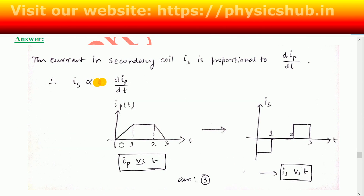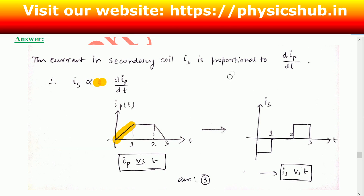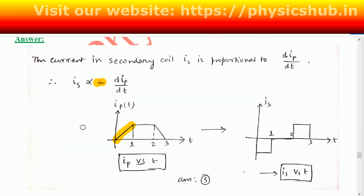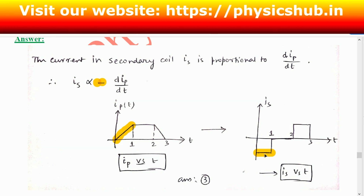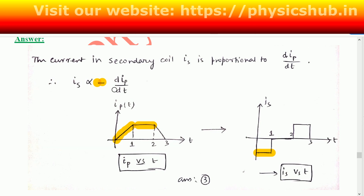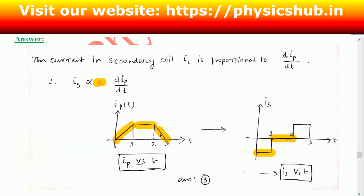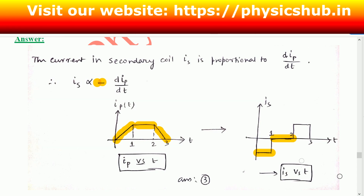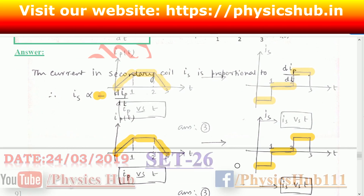We take the derivative of the input signal with a negative sign to get the output. From the first segment to the next, the input is a linear function, so the derivative is a constant — but with a negative sign, giving a negative constant. Where the input is constant, the derivative is zero. For the portion with negative slope, applying the negative sign gives a positive output. This matches option C, so option C is the correct option.